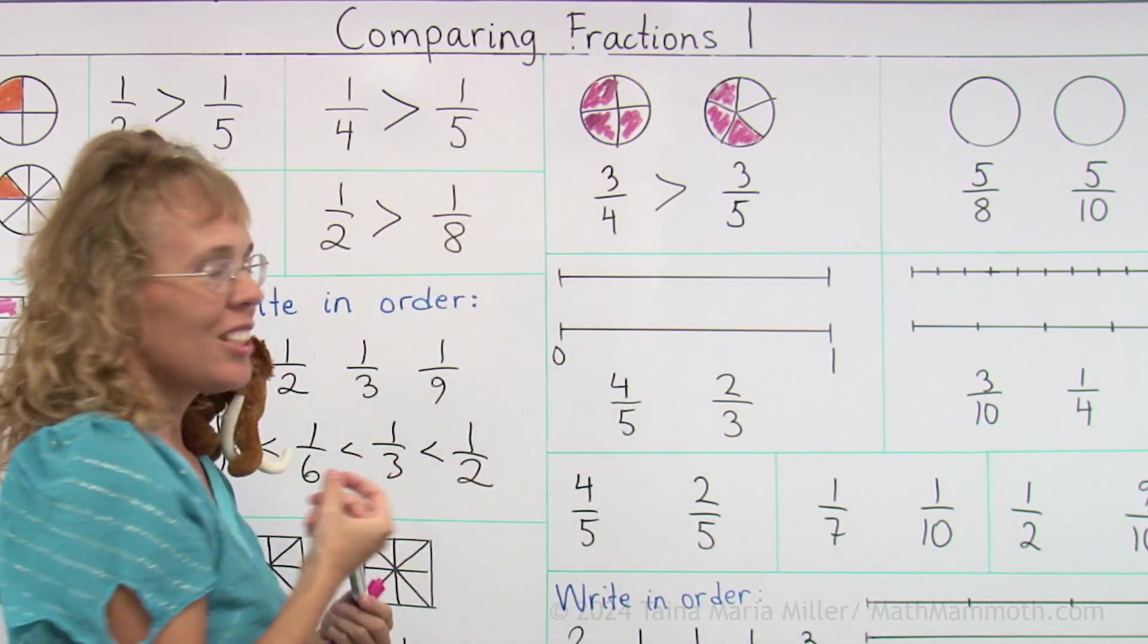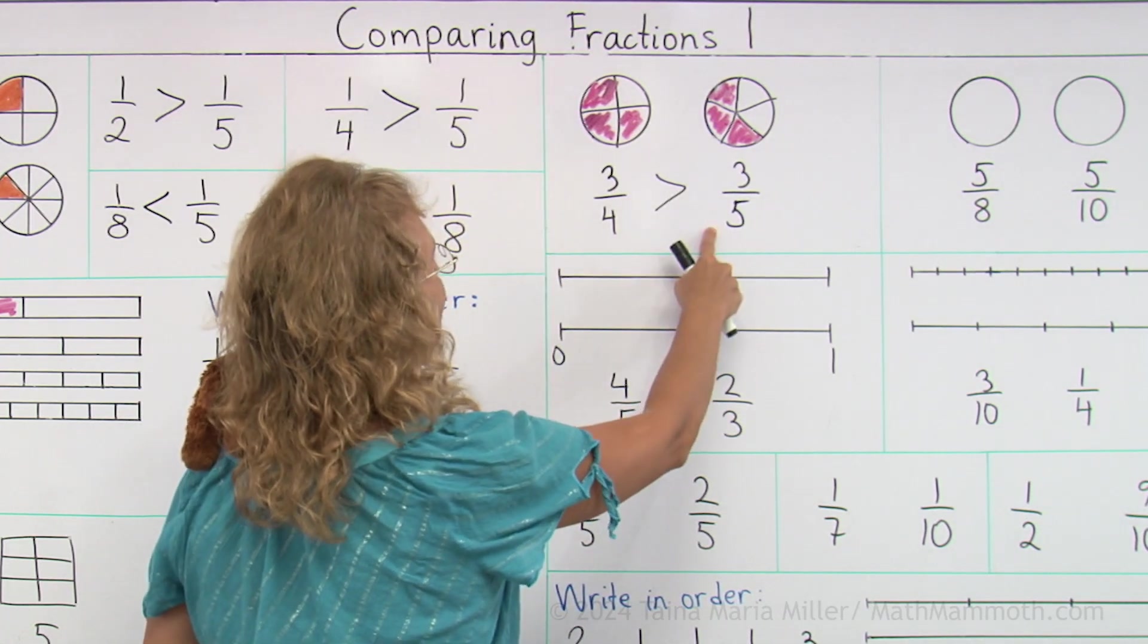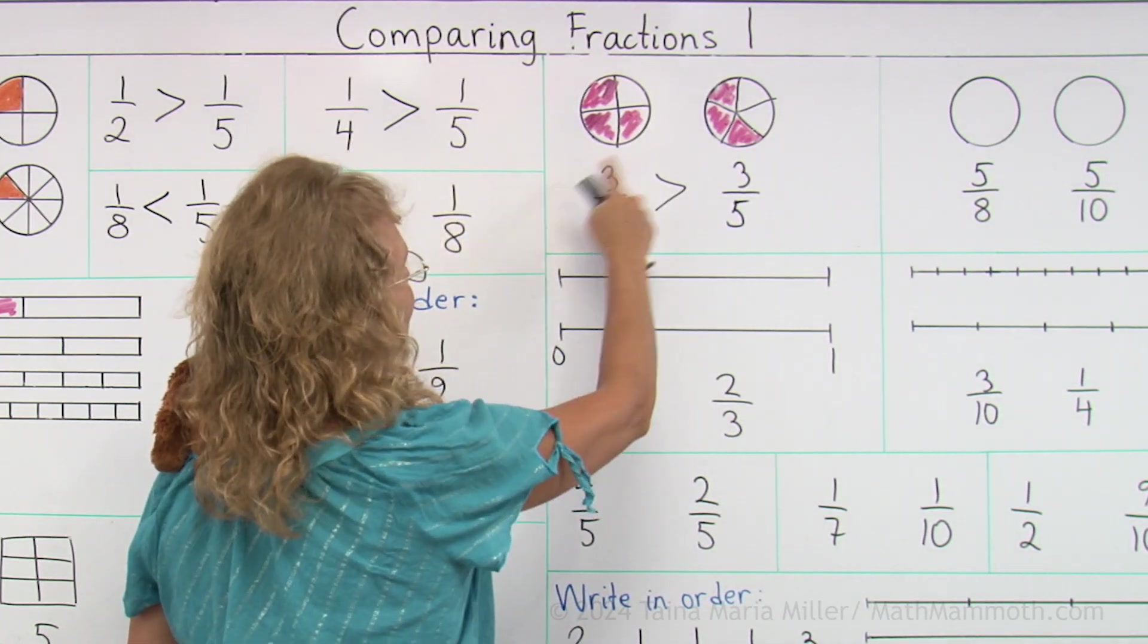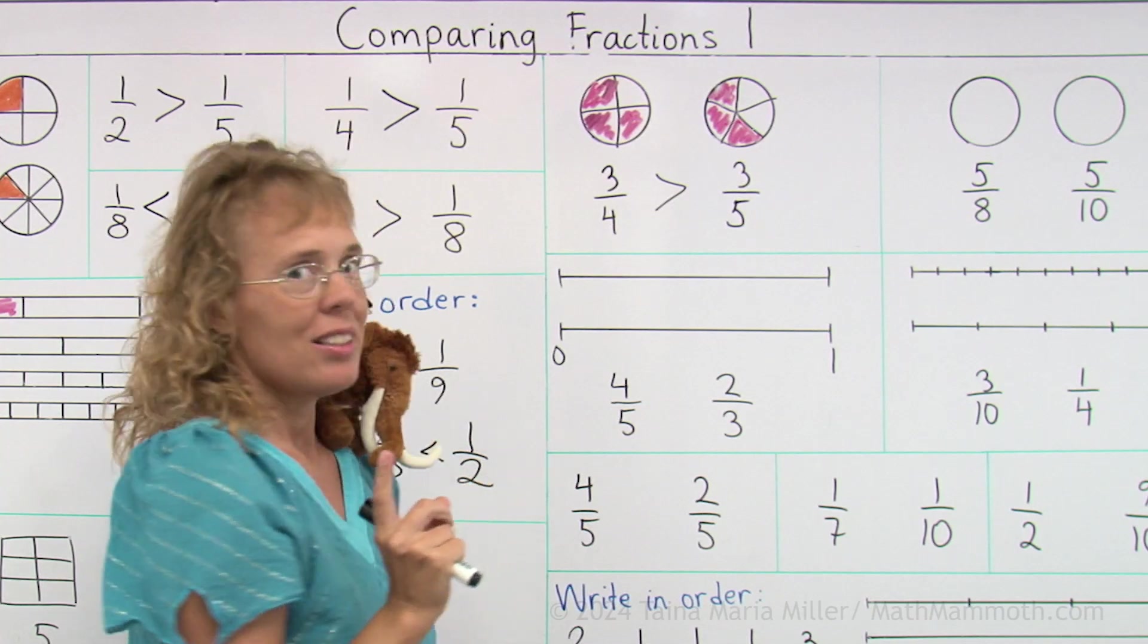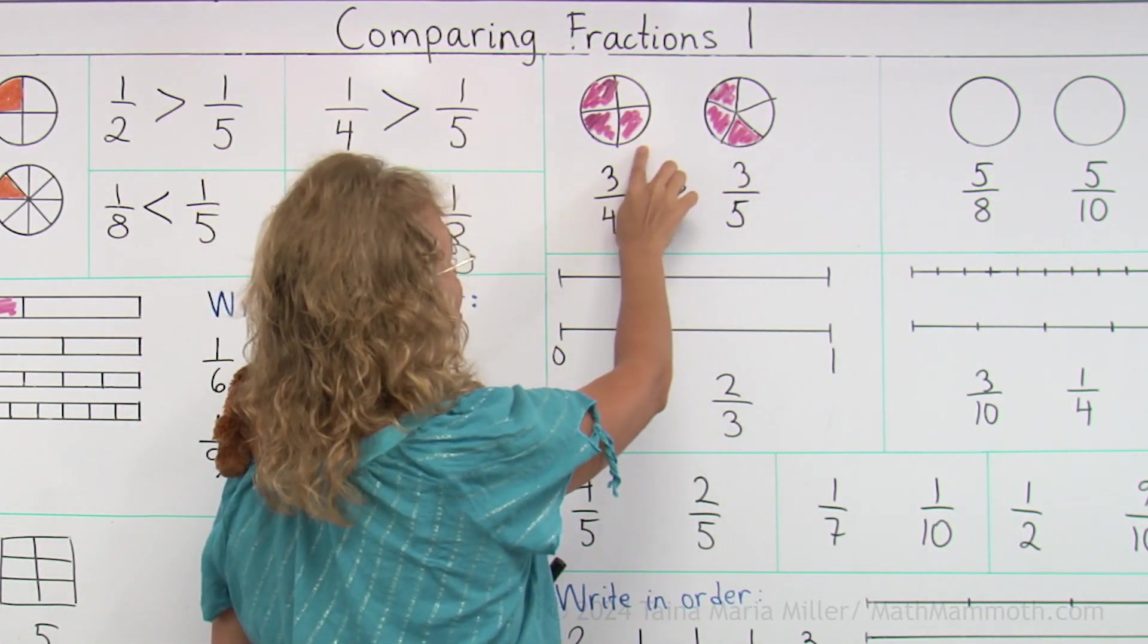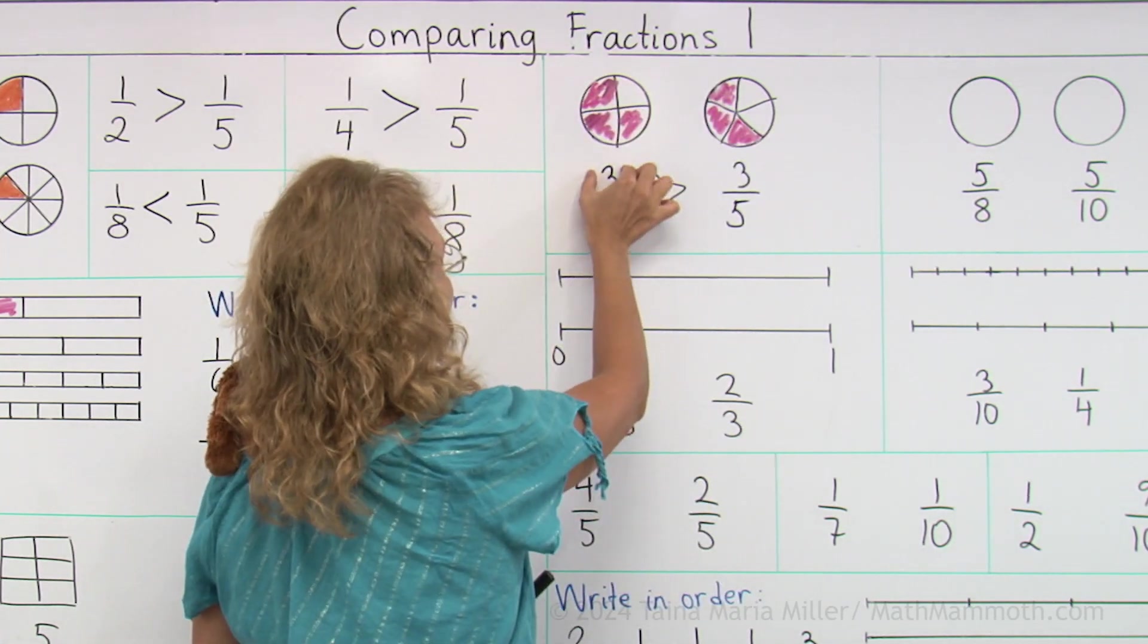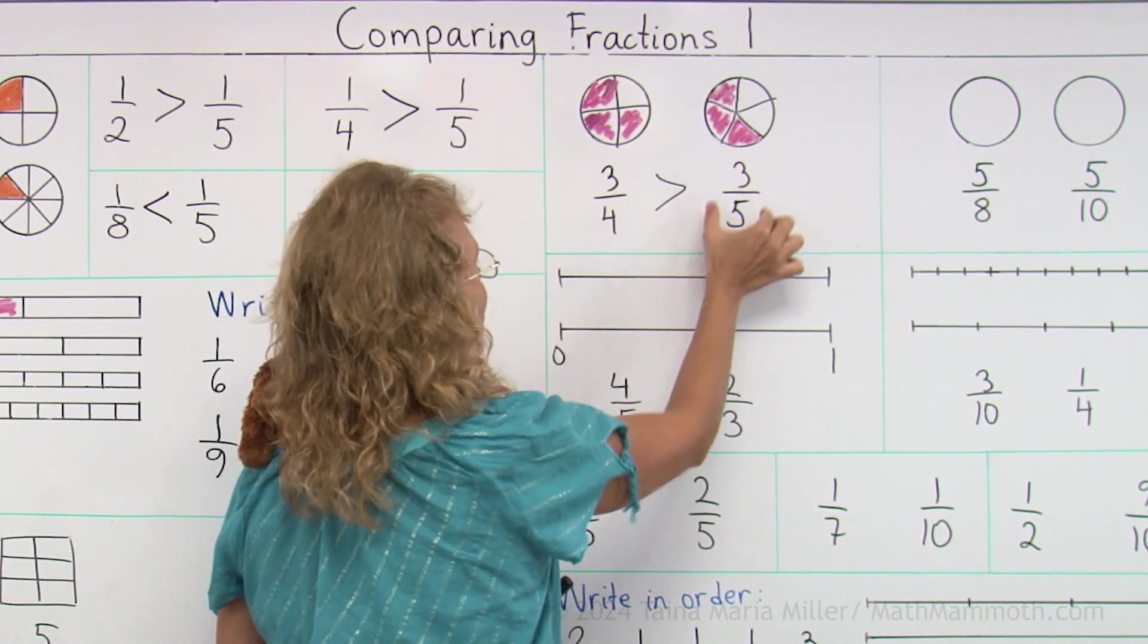And you can figure this out without the pictures too. Think this way. Here we have fourths, here we have fifths. We have three pieces and three pieces, but each fifth is a smaller piece than each fourth. Each fourth here, one fourth is more than one fifth. So when we take three of those fourths, it is still more than three of those fifths.